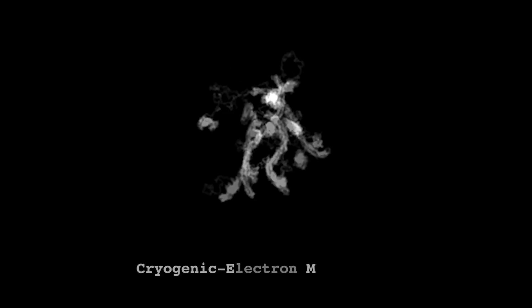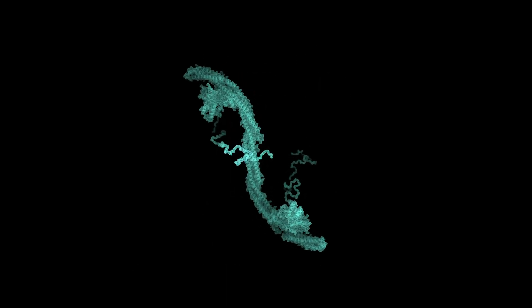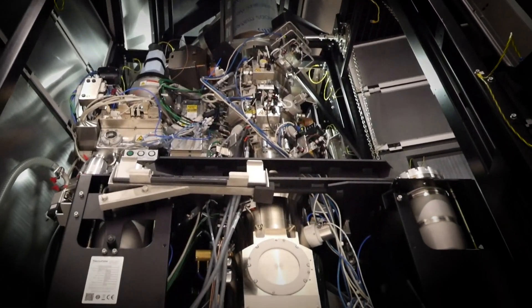Cryo-EM, or cryogenic electron microscopy, is a microscopy technique that lets you see molecules at near atomic resolution. Despite the fact that it's grown extremely popular over the last few years, it's really only being used to study rigid static molecules.